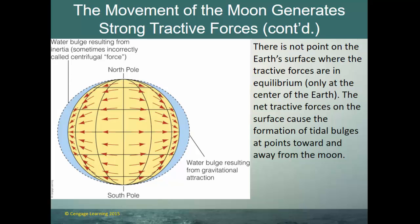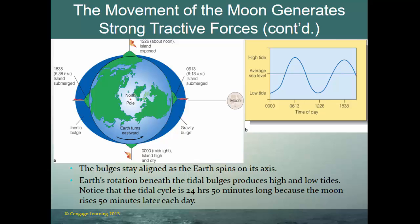The water bulge resulting from inertia is on the backside of the earth, and the water bulge from gravitation is on the front side. There is no point on the earth's surface where the tractive forces are in equilibrium — only at the center of the earth. The net tractive forces on the surface cause water to move toward those two bulges — one pointing toward the moon and one pointing away. Looking down from above, the earth turns counterclockwise from west to east, meaning at one point you'll be under a high tide and at another, a low tide. The bulges stay aligned as the earth spins.